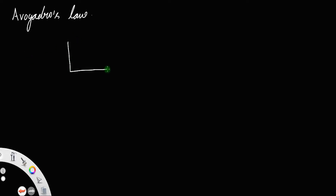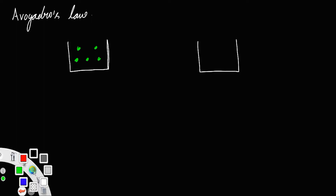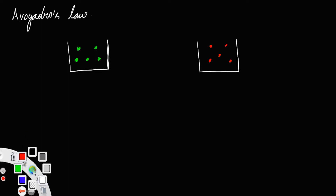How can we prove Avogadro's law according to kinetic theory of gases? Let us consider two beakers containing different gases — let green represent the gas in the first beaker and red represent the gas in the second beaker. Let the volume of both beakers remain the same, and the pressure and temperature on both beakers also remain the same.